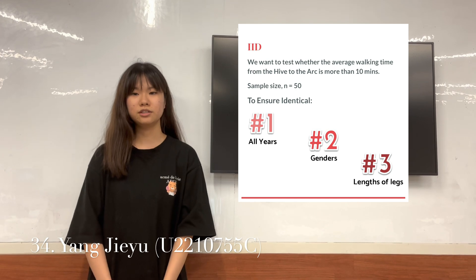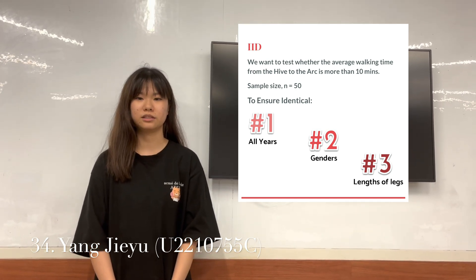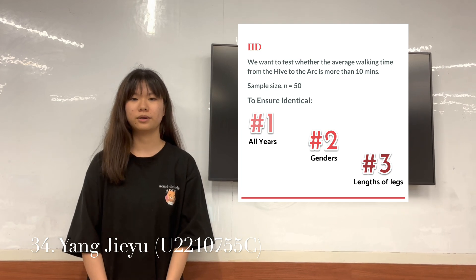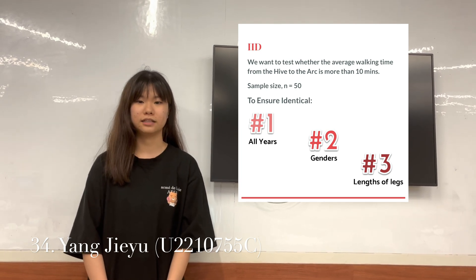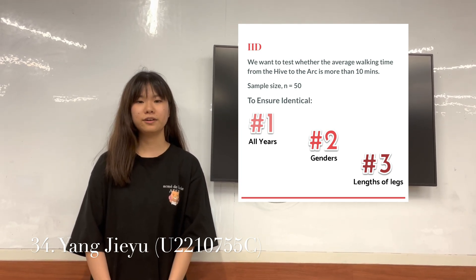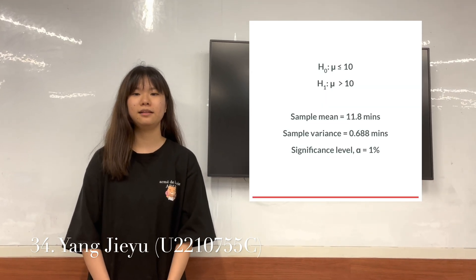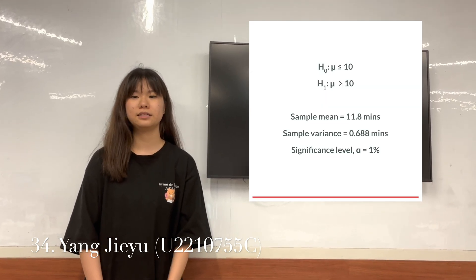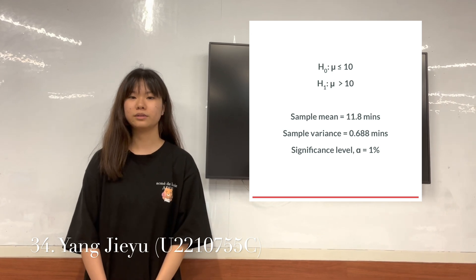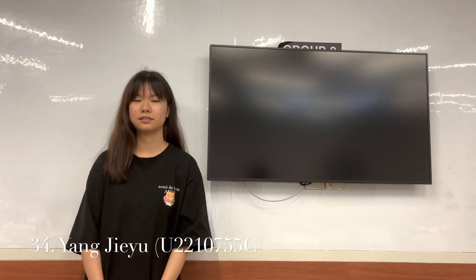To ensure independence of data, we make sure that we collect the students' walking times when they are walking alone, so that the walking speeds of others do not affect their walking times. We find that the sample mean is 11.8 minutes and the sample variance is 0.688 minutes squared.